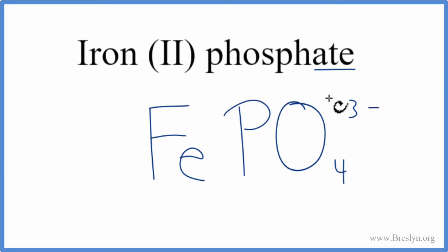Iron, that's a metal. And phosphate, that's made up of a group of non-metals. When we have a metal and non-metals, we need to take into account these ionic charges when we write the formula for iron (II) phosphate.